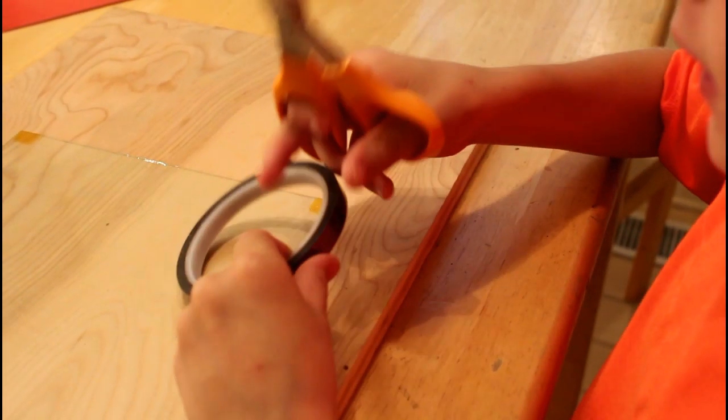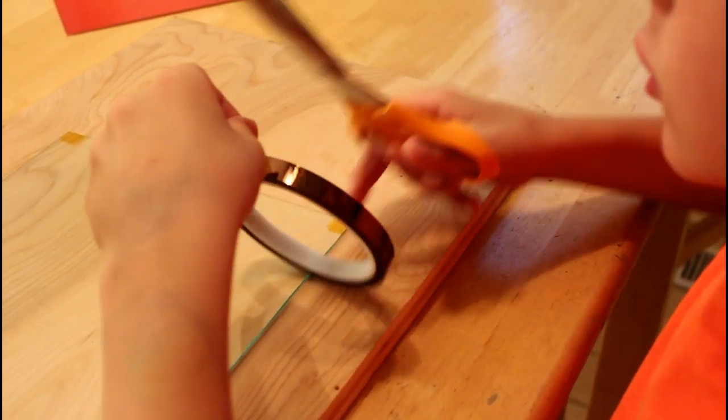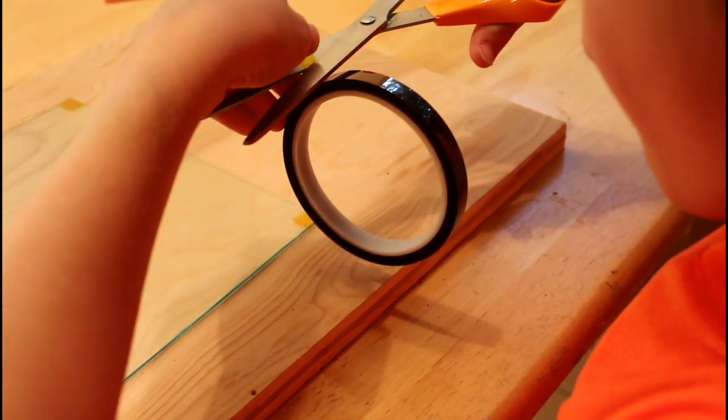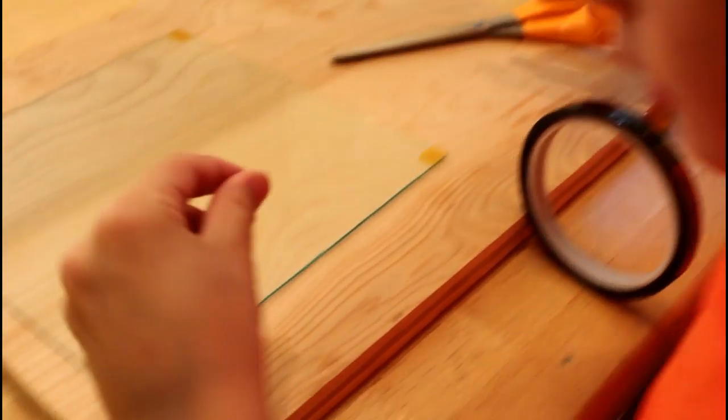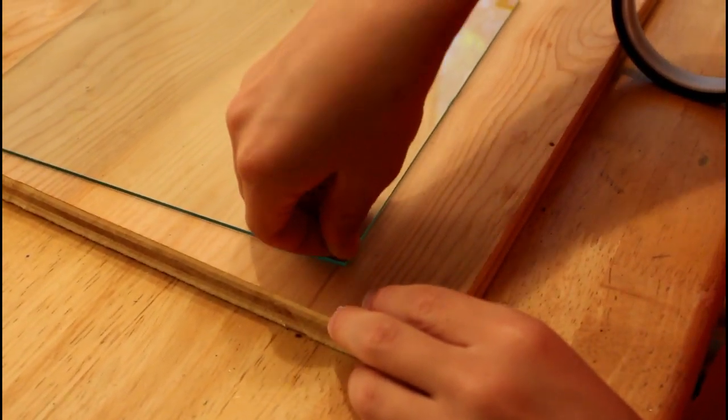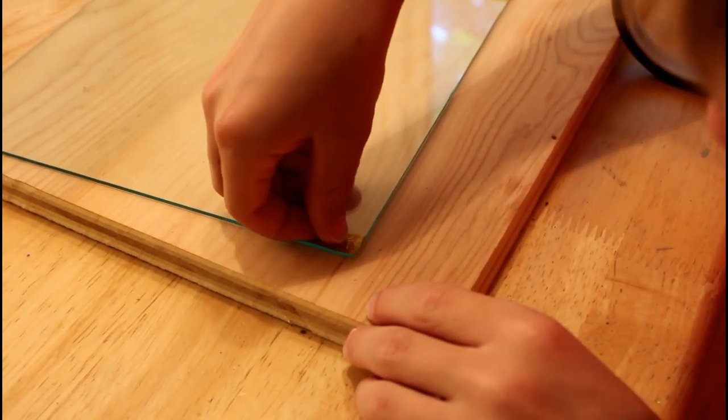You want to protect the glass from the screws a little bit. So take about a centimeter of kapton tape and put it right on the corner of the glass. And you want to make sure you do this for all four corners.